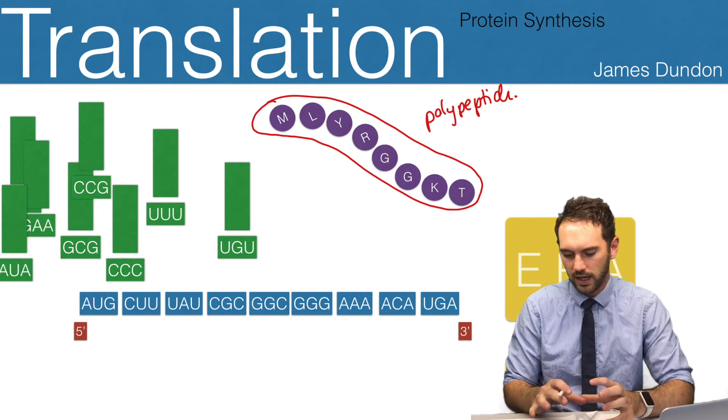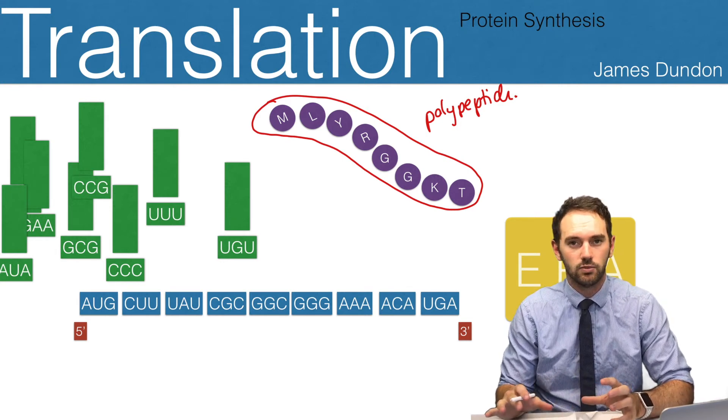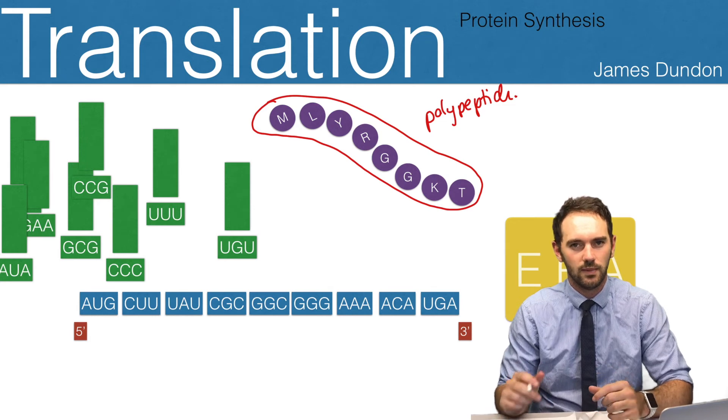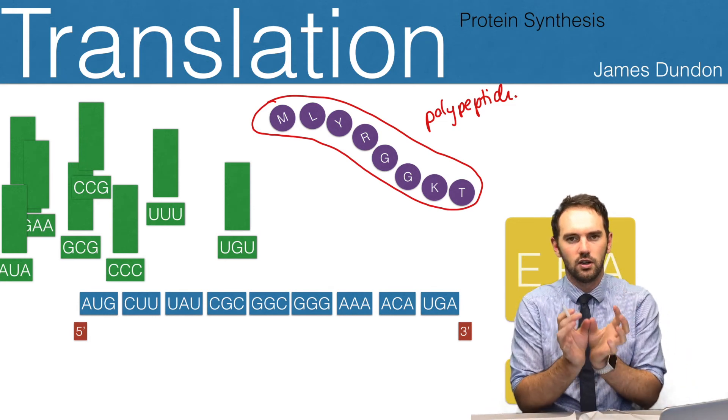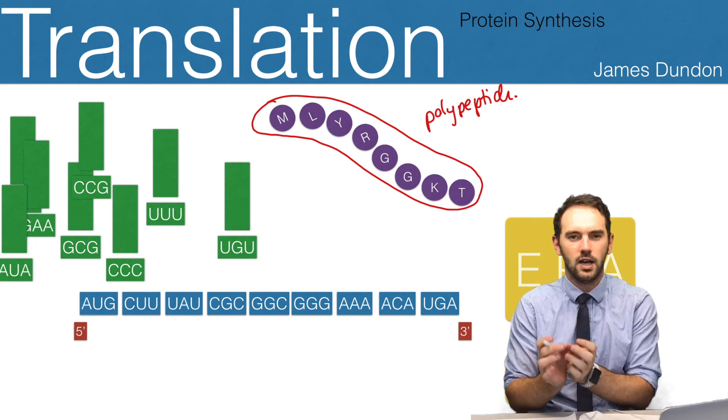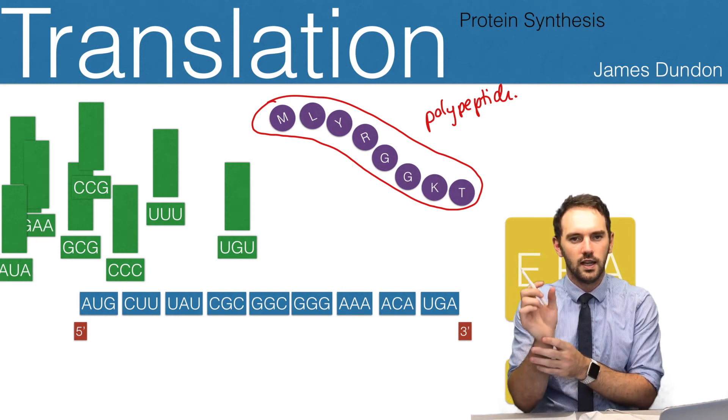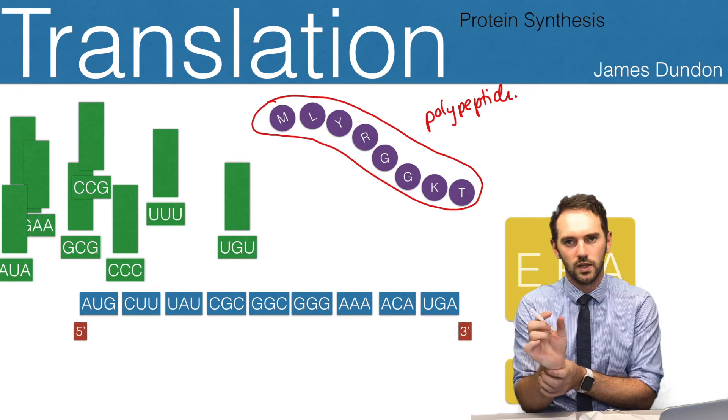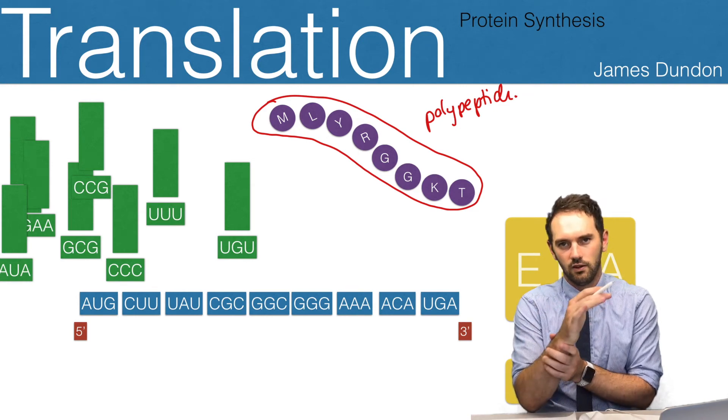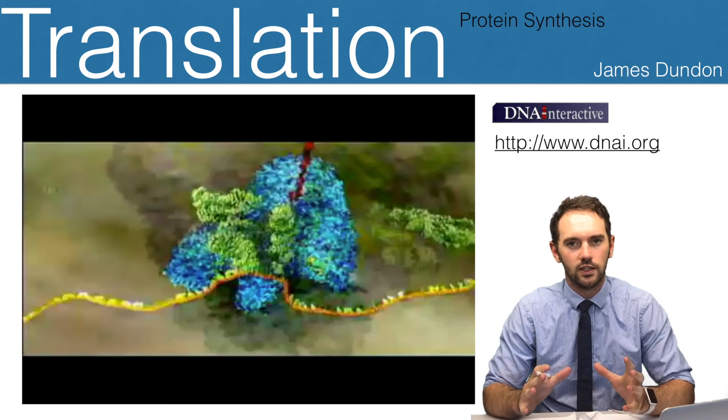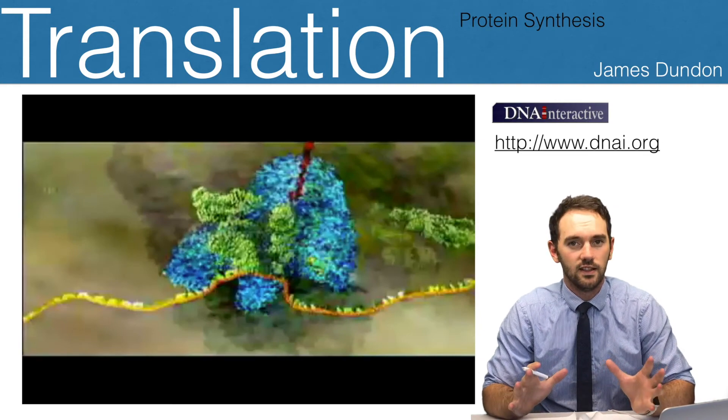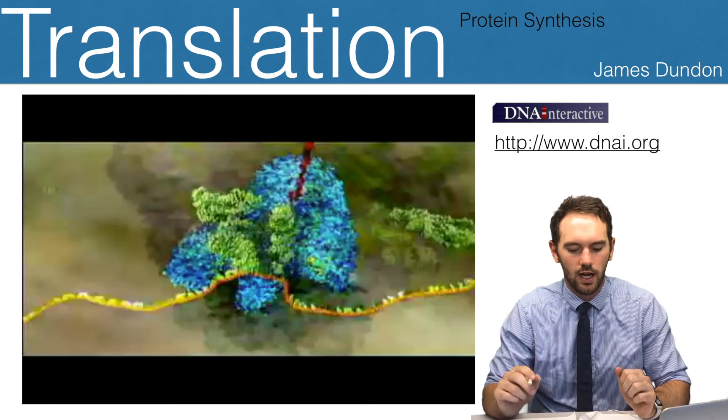That's the basic translation process. Hopefully that made a lot of sense. Basically, the ribosome moves along one codon at a time, matching up an anticodon, then forming a peptide bond between the adjacent amino acids, forming that sequence. As I did in the last video, it's a really good idea to see what it looks like more in real life. It's easy to see it in a diagram.